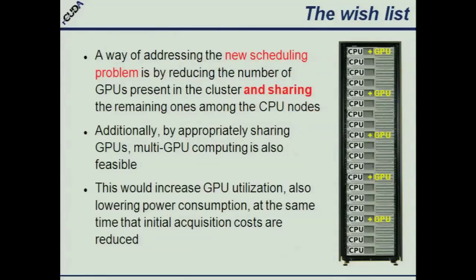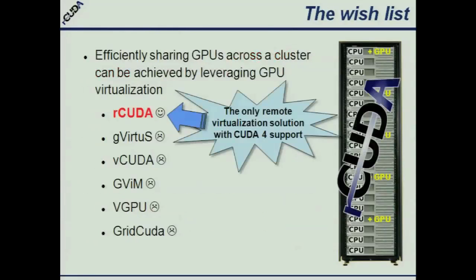So how can we address this new concern? What we can do is reduce the number of GPUs and share the remaining GPUs across the entire cluster. Sharing GPUs is hard — it is not done right now, except for Arcuda. If we are sharing GPUs, we could also address the multi-GPU computing scenario: we will be able to run an application in any node, and as the GPUs are shared across the entire cluster, we will be able to provide those GPUs to that application. At the end, what we are doing is increasing GPU utilization, reducing cost, reducing energy consumption.